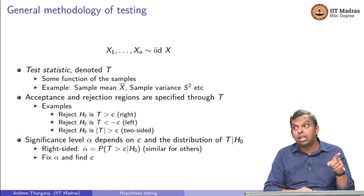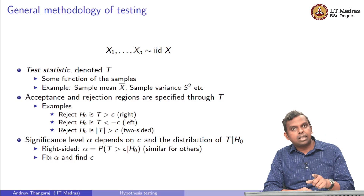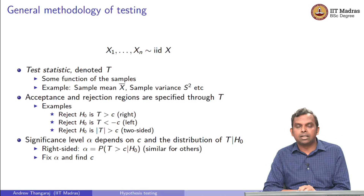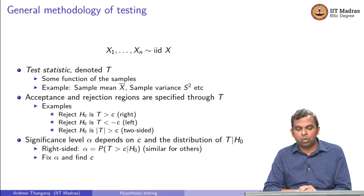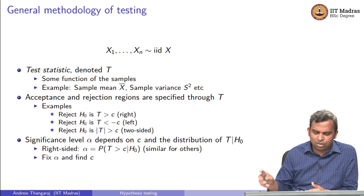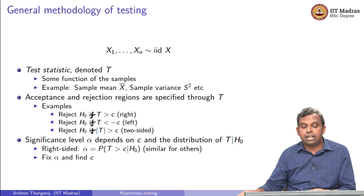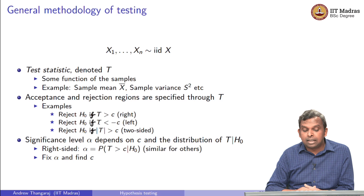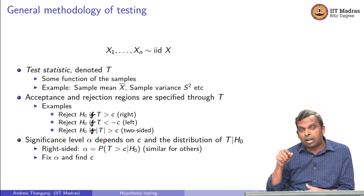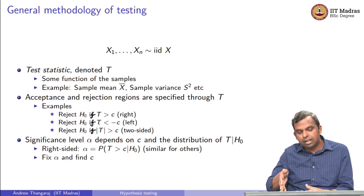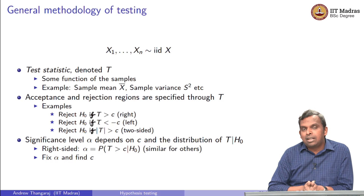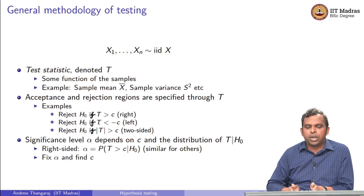Remember, what is alpha, the significance level? It is the probability of rejecting the null given the null is true. Supposing you took some test statistic T and you took the rejection region to be T greater than C — reject H₀ if T is greater than C — then the significance level alpha will be the probability that T is greater than C given H₀. So you can fix your alpha and find C. This is a very standard way in which you can do this, and we have seen this before in the examples as well.